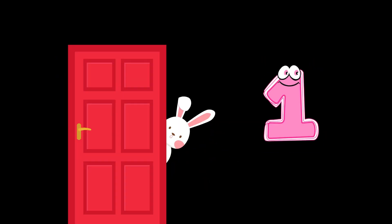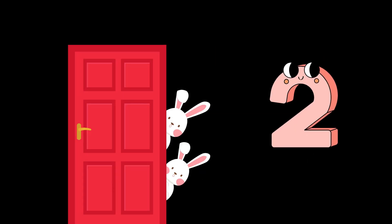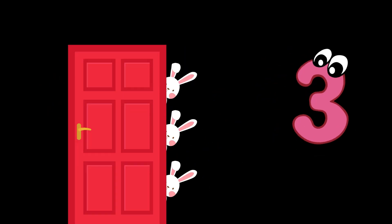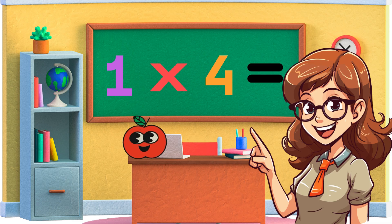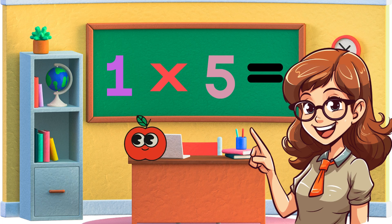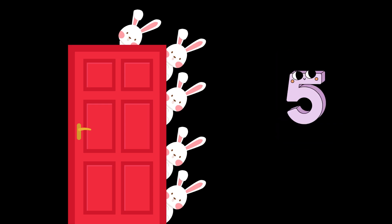1×1 is 1, 1 bunny pops out the door. 1×2 is 2, 2 bunnies pop out the door. 1×3 is 3, 3 bunnies pop out the door. 1×4 is 4, 4 bunnies pop out the door. 1×5 is 5, 5 bunnies pop out the door. 1×6 is 6, 6 bunnies pop out the door.